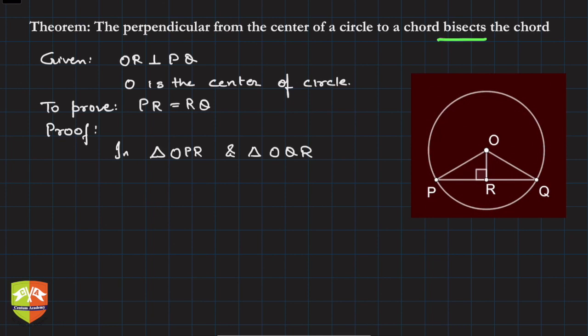We have to find two triangles. PR should be part of one triangle, RQ should be part of the other triangle. Then if we somehow prove that PR and RQ are the corresponding parts of those two triangles,